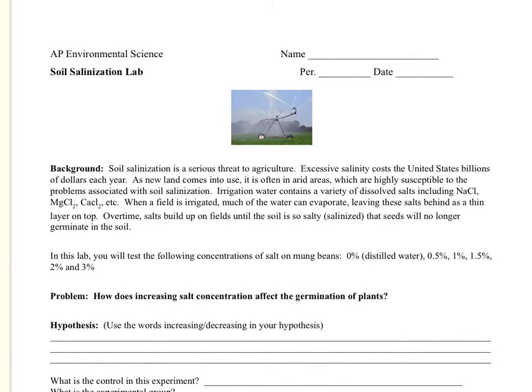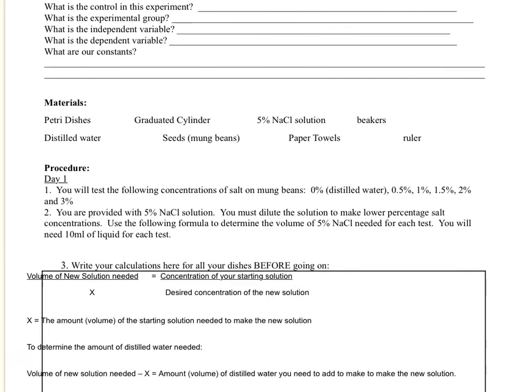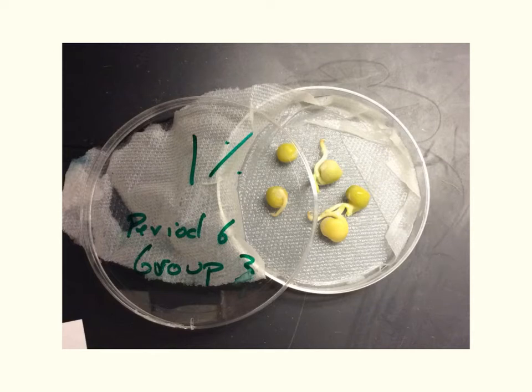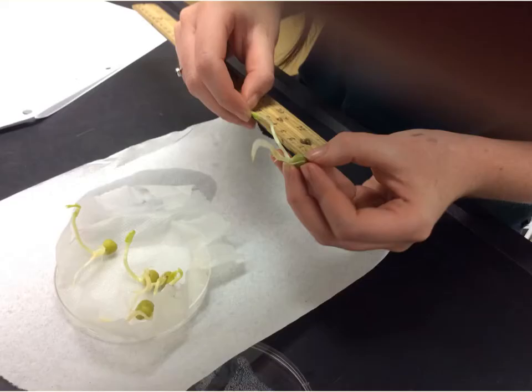We're going to use the results from this lab, the soil salinization lab. I'll go ahead and give you some data that is typical for soil salinization. Let me remind you of what we did in this lab. We germinated seeds in different concentrations of salt, and then about four days later counted how many of the seeds germinated. This particular picture shows one percent salt solution and it looks like four out of five of the seeds here germinated. Sometimes we use five seeds, sometimes we use ten seeds.